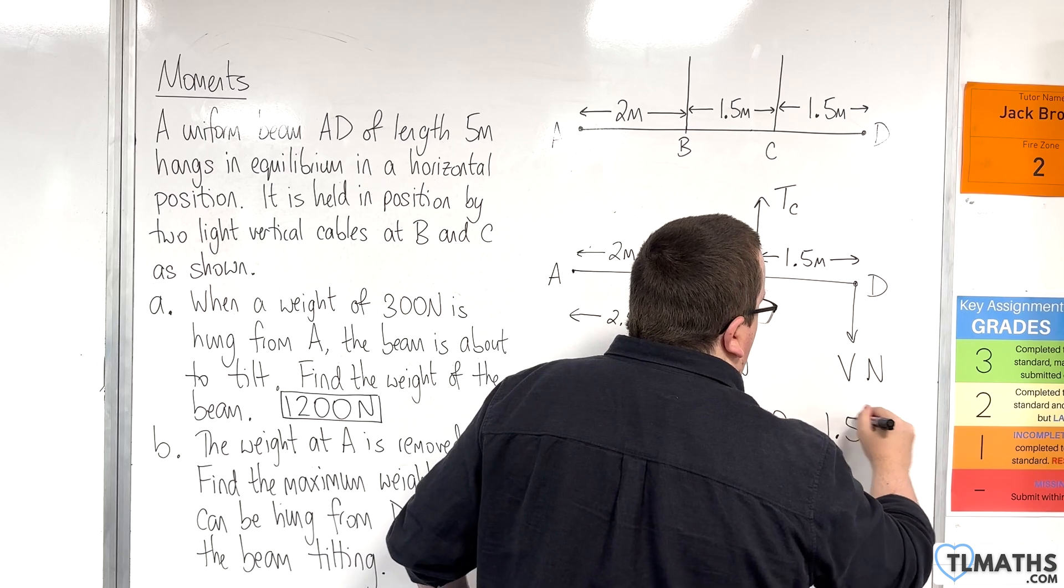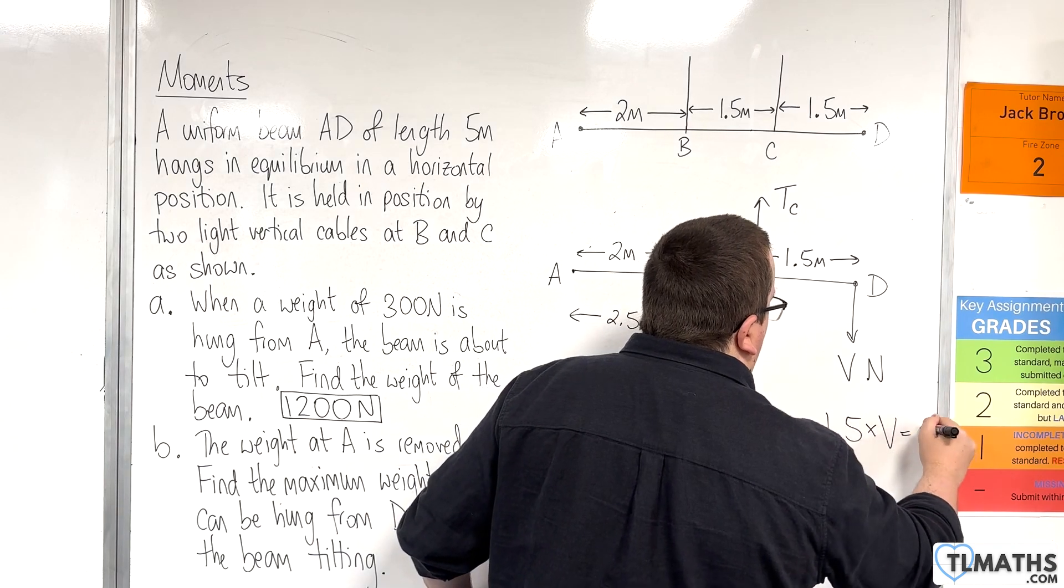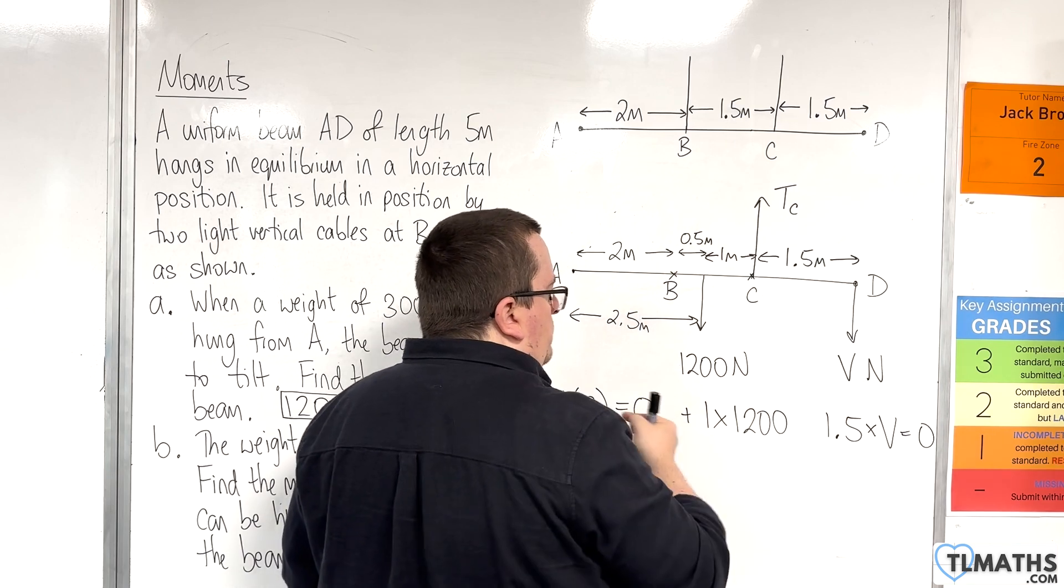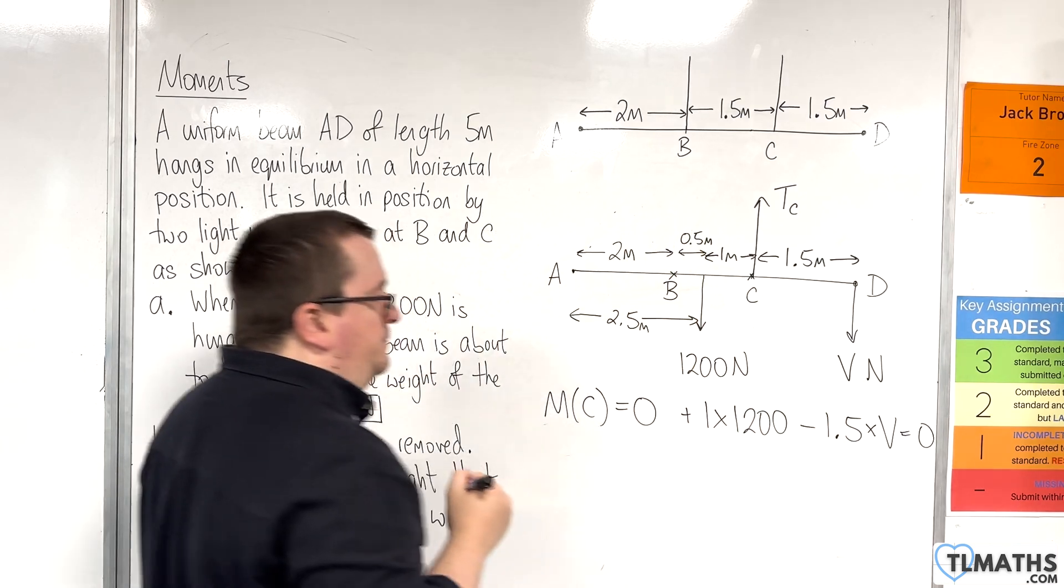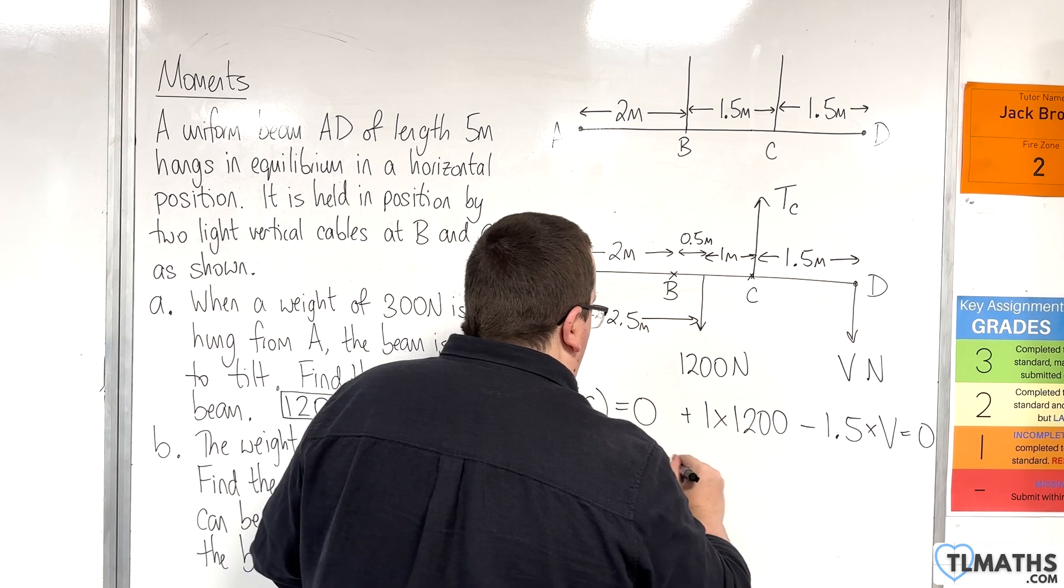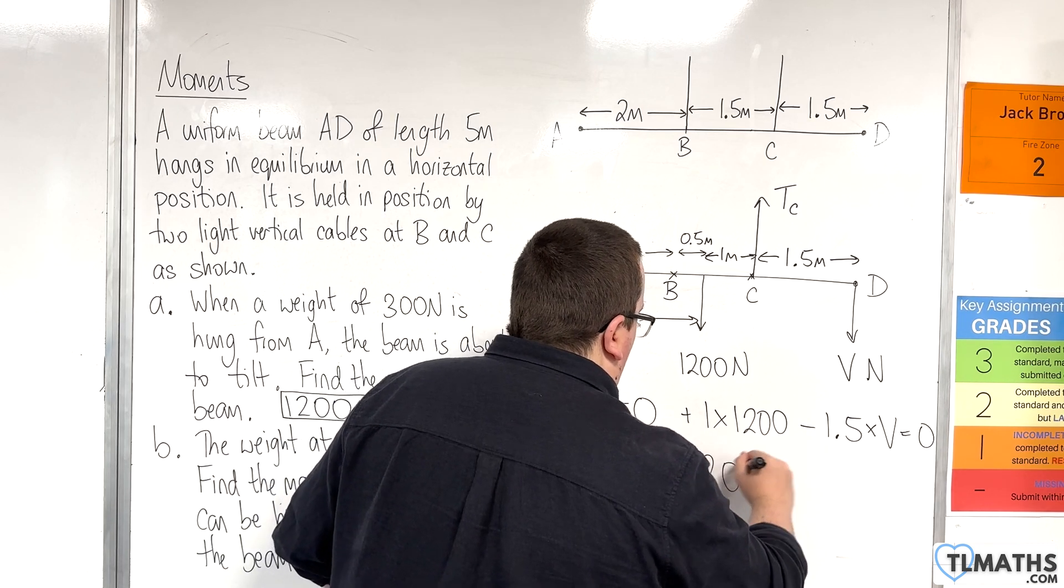And then we are 1.5 metres away from the V-newton force, so 1.5 times V. And that's going round in a clockwise motion, so that would be negative.